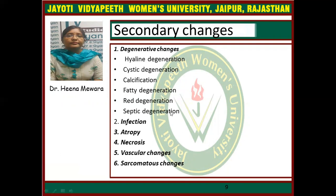In cystic degeneration, there is liquefaction of areas with hyaline changes, so cystic spaces are found in the fibroid. In fatty degeneration, fat globules are deposited in the muscle cells, mainly found after menopause. In calcification, the whole fibroid is converted into a calcified mass called a womb stone, due to precipitation of calcium carbonate or phosphate within the tumor.